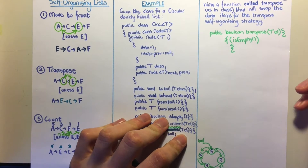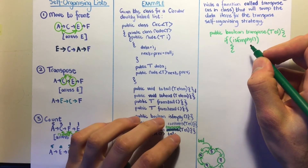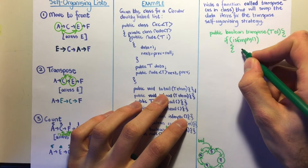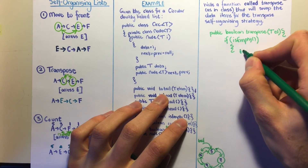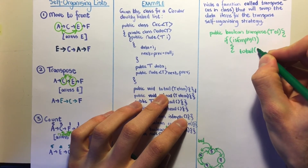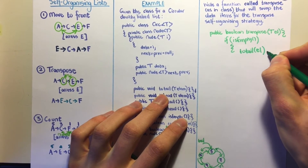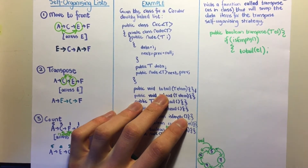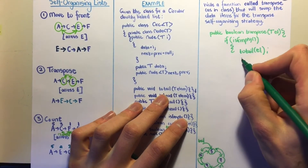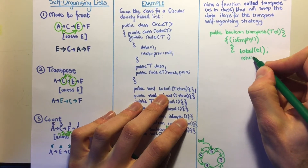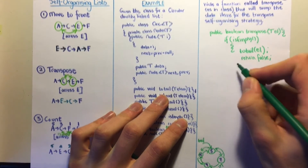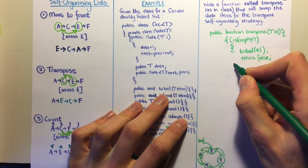If the list is empty, we insert the element at the tail using the addToTail method with el, and then return false to indicate that the element was not originally in the list.